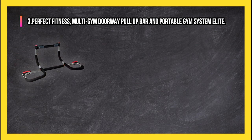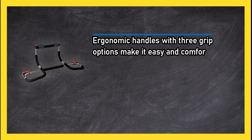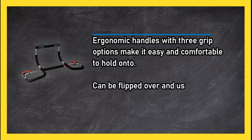At number three: Perfect Fitness Multi-Gym Doorway Pull-Up Bar and Portable Gym System Elite. Ergonomic handles with three grip options make it easy and comfortable to hold on to. Can be flipped over and used for sit-ups, push-ups, and arm dips. The 300 pound weight capacity makes it a great choice for most users.